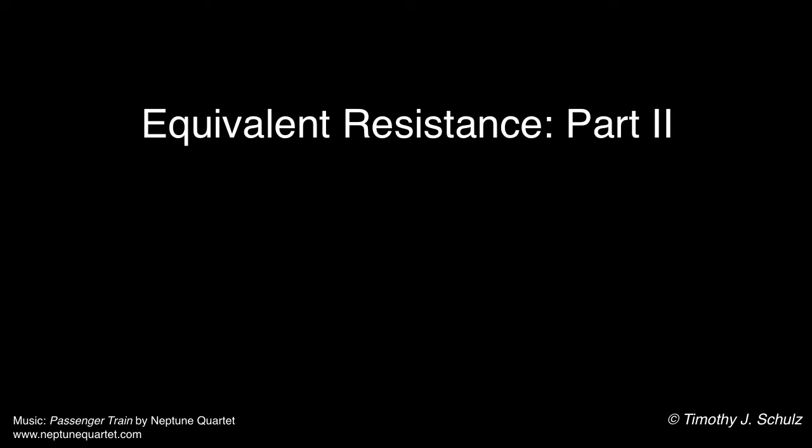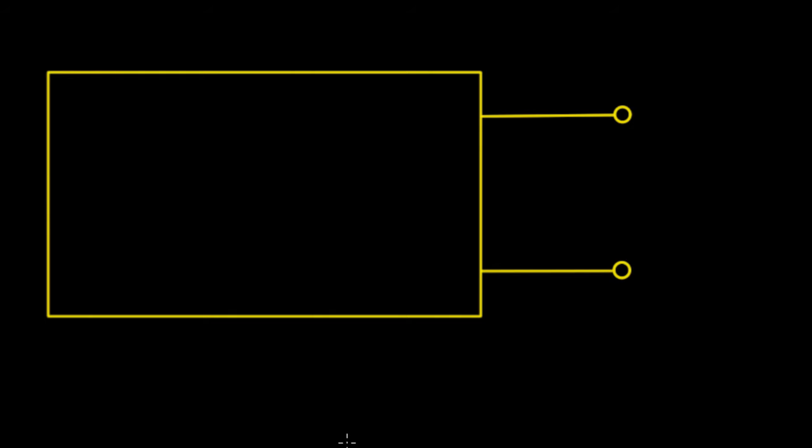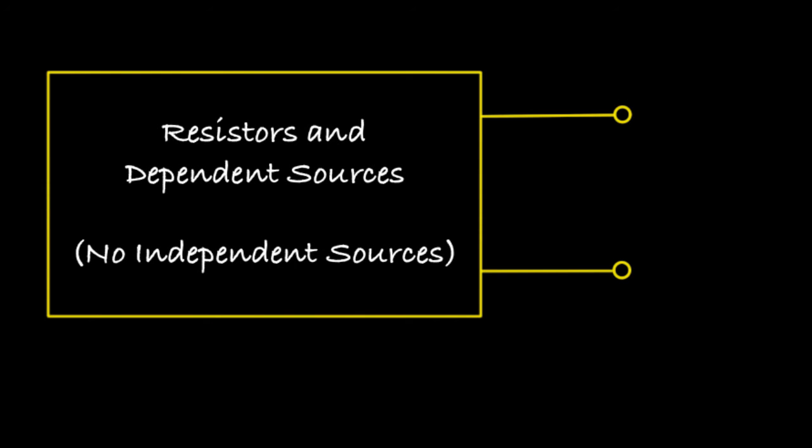In this lecture, we show how to determine the equivalent resistance for an electrical network that contains resistors and dependent voltage or current sources. In a previous lecture on equivalent resistance, we summarized the methods for determining the equivalent resistance for two or more resistors connected in series or in parallel, and provided examples to reduce a complicated network of resistors to a single resistance. Now we'd like to look at a more general situation where a network contains resistors and dependent voltage or current sources, but does not contain independent sources.